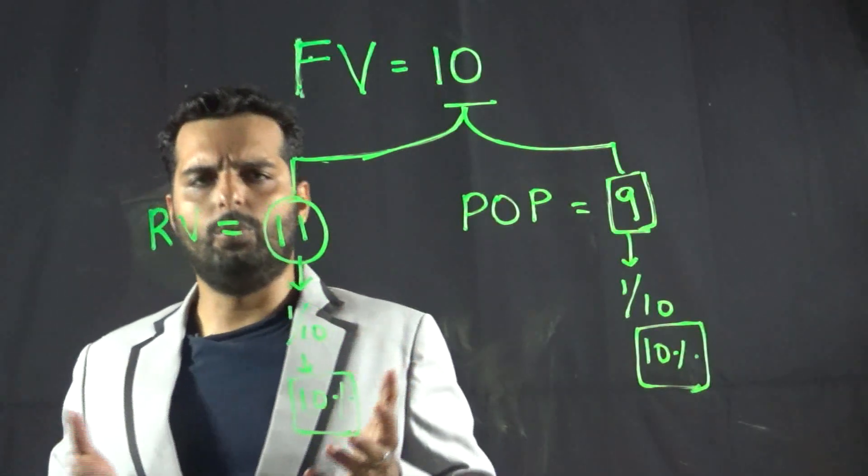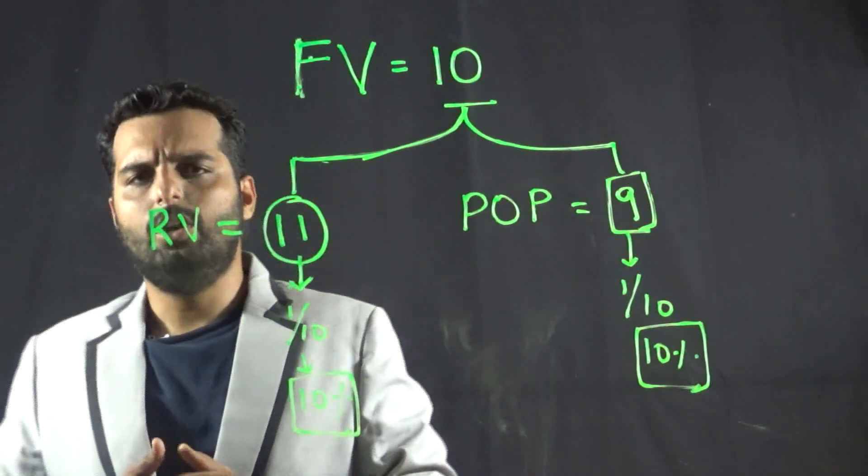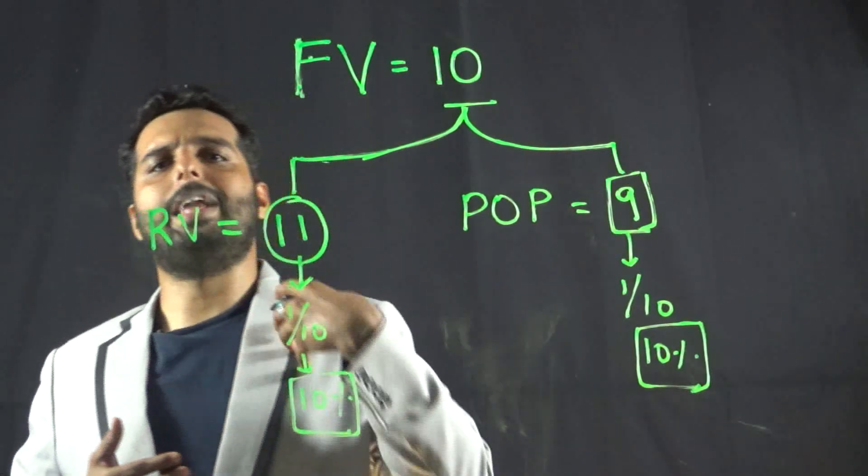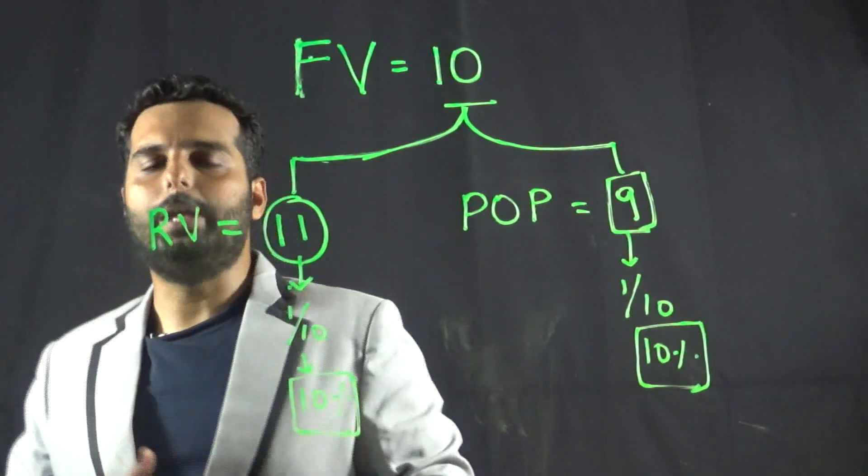And let us assume that on redemption, on expiry, they are planning to redeem this at a price of 11 rupees.